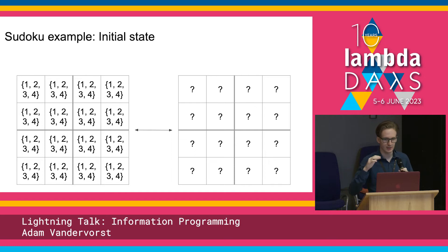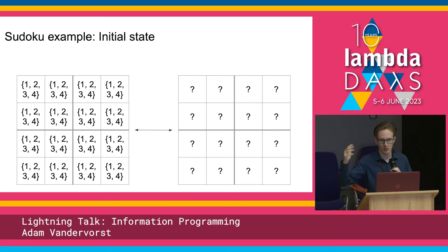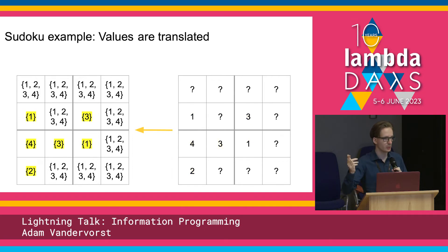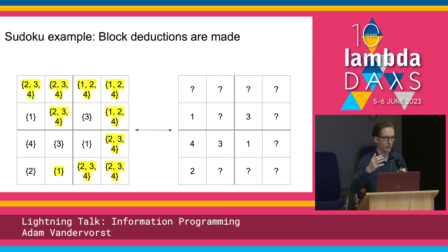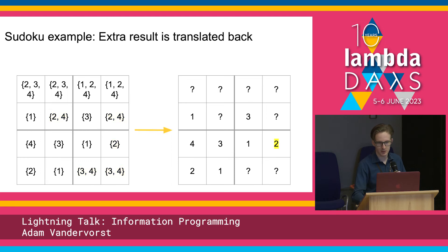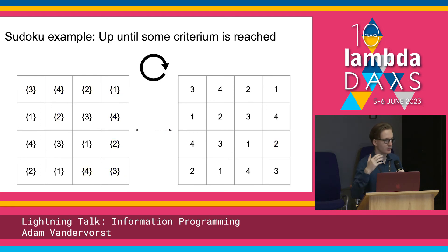The example we will go over is Sudoku. We start with all values under these lattices initialized to the bottom elements, which is 1 through 4, or the question mark. We load in the Sudoku on the right-hand side. Then with the translation we talked about, we can get to the singleton sets on the left-hand side. We can then do deductions on our Sudoku — for example, block-level deductions, which involve subtracting the singleton elements from the other sets in the block, and translating that back. By doing that we get another result. We do the same for rows, columns, and repeat up until some stop criteria.